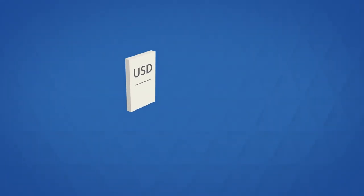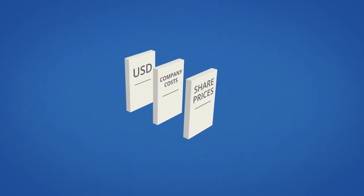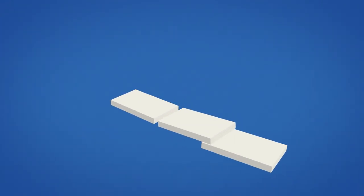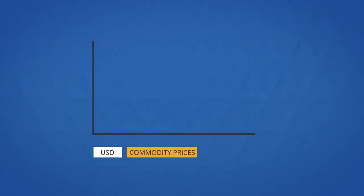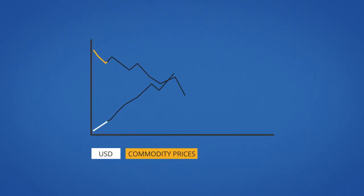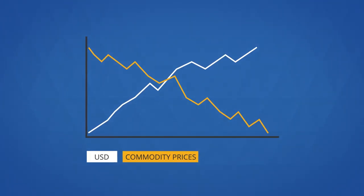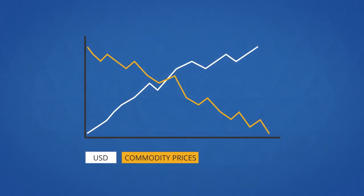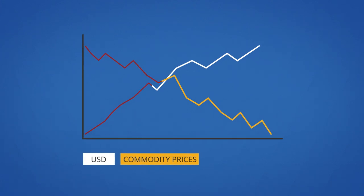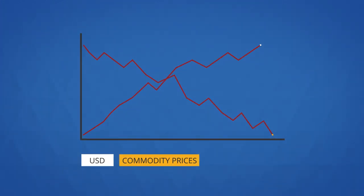So when the value of the dollar changes relative to other currencies, it affects companies' costs and, as a result, their share prices. The relationship between the dollar and commodity prices has typically been inverse, meaning prices tend to drop as the dollar strengthens. However, this is not always the case, so it's important to thoroughly assess the circumstances before placing any trades.